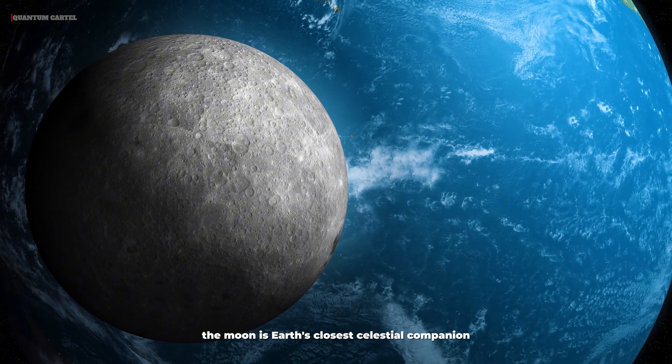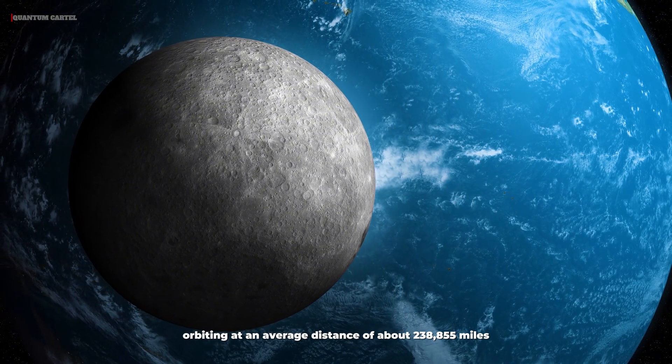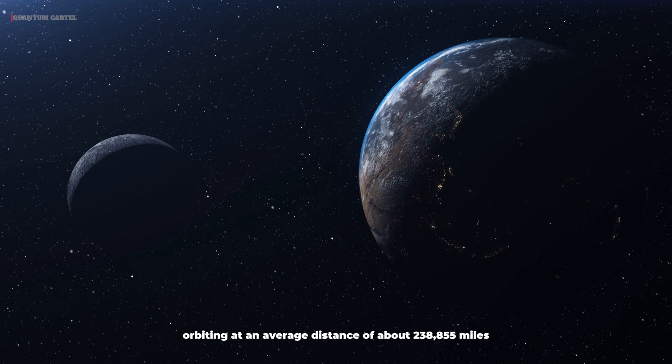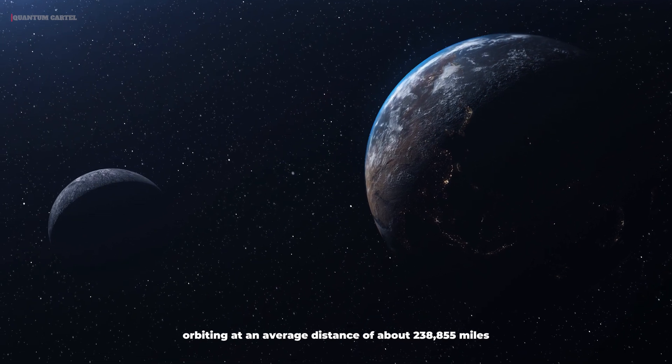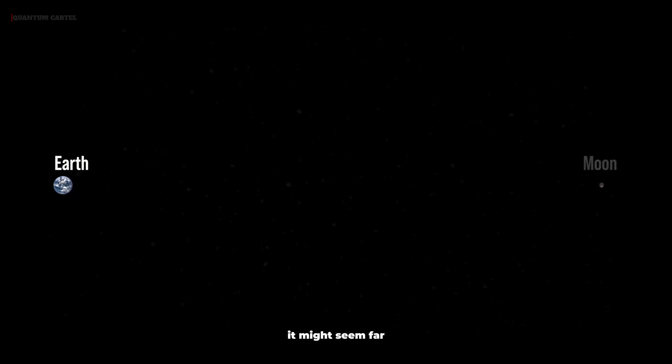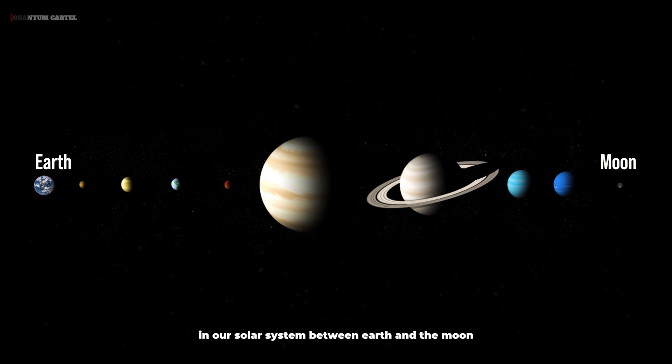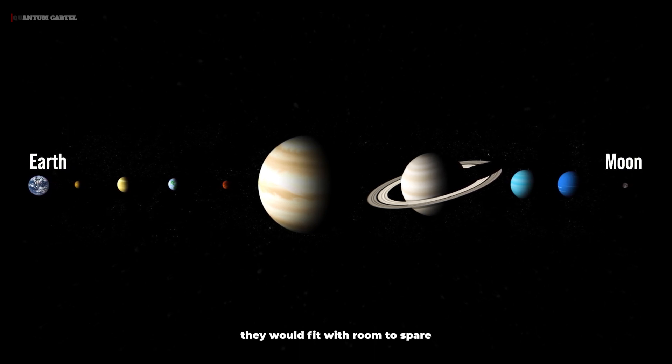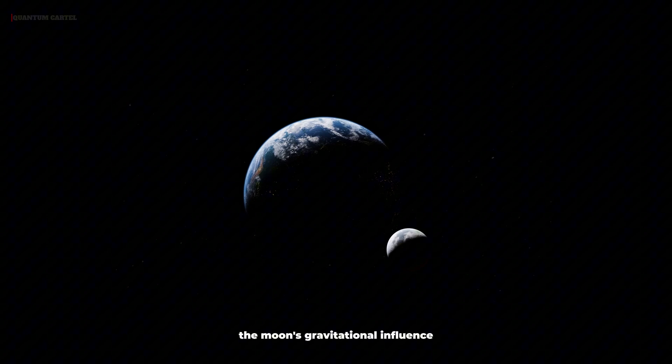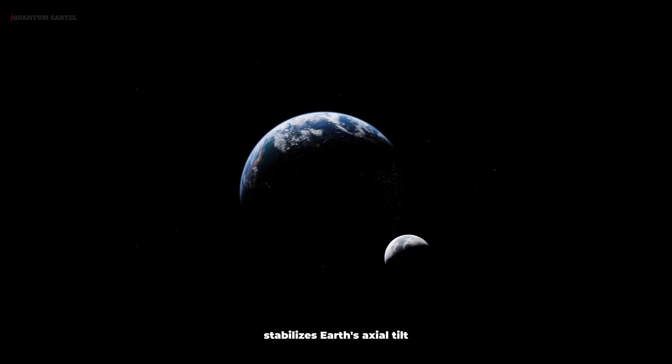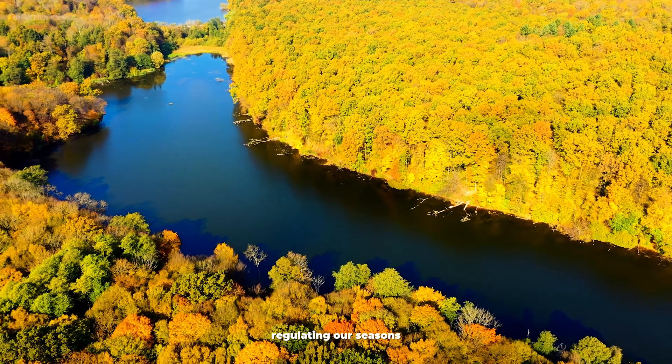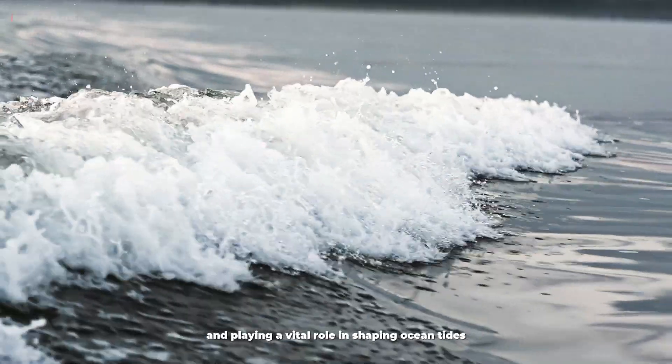The Moon is Earth's closest celestial companion, orbiting at an average distance of about 238,855 miles. It might seem far, but the gap isn't as immense as it feels. Picture this: if you could line up all the other planets in our solar system between Earth and the Moon, they would fit with room to spare. The Moon's gravitational influence stabilizes Earth's axial tilt, regulating our seasons and playing a vital role in shaping ocean tides.